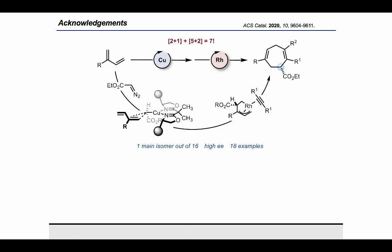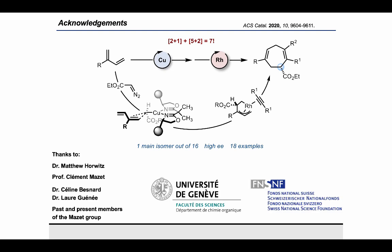Overall, our sequence provides practical access to optically active seven-membered carbocycles over two steps. The diastereoconvergent, chemoselective, and enantiospecific cycloaddition preserves the high enantiomeric excess achieved in the cyclopropanation, while overcoming the apparent limitation of its low diastereoselectivity. I hope you enjoyed listening to my presentation as much as I enjoyed working on this project and sharing it with you. I would like to thank Dr. Matthew Horwitz for giving me this wonderful opportunity, my supervisor Professor Clément Mazet for his constant support, Céline Beznar and Lourke Genet from our X-ray team, and the Swiss National Science Foundation and the University of Geneva for financial support. I wish also to thank all my present and former lab mates for their suggestions and for the pleasure that it is to be with them. Thank you all for your kind attention.